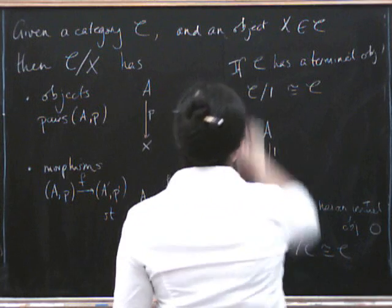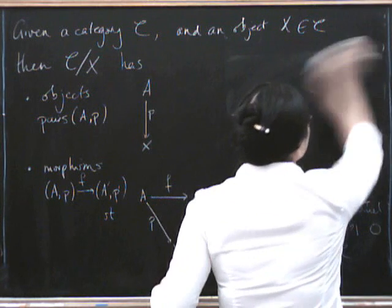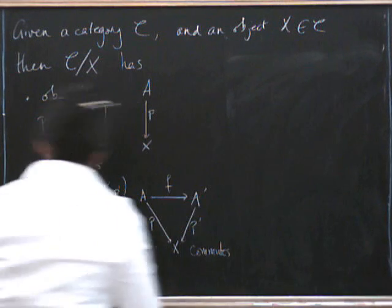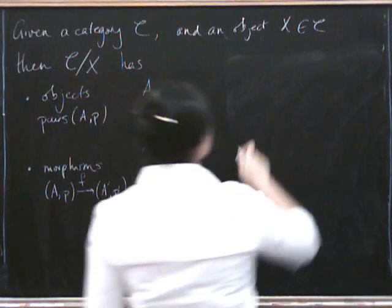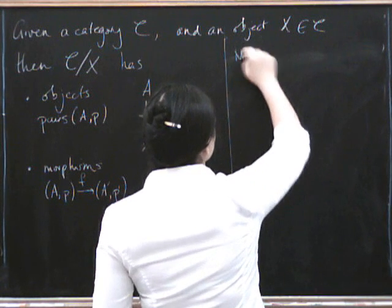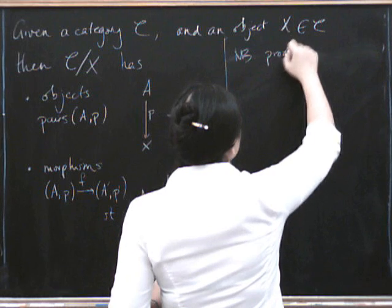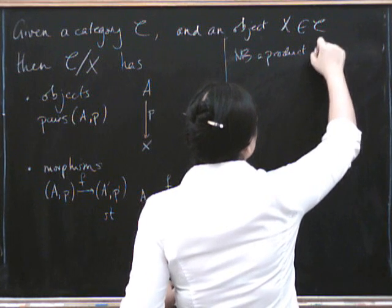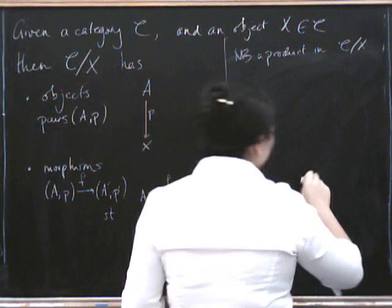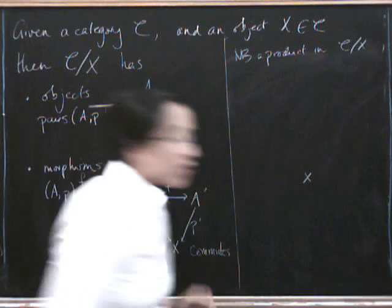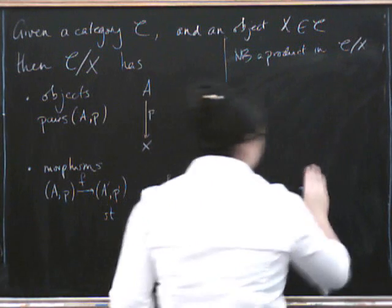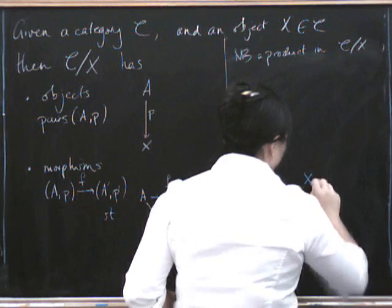So what was I going to say about products? What I want to show is that products in this slice category are the same as, well, as the same as what, I wonder. So let's think about products. Products in this slice category. Well, what's it going to be? So here's X. Everything lives over X. So we're just going to put that on the board. Perhaps I'll put it in the balloon because this X just isn't going to move.